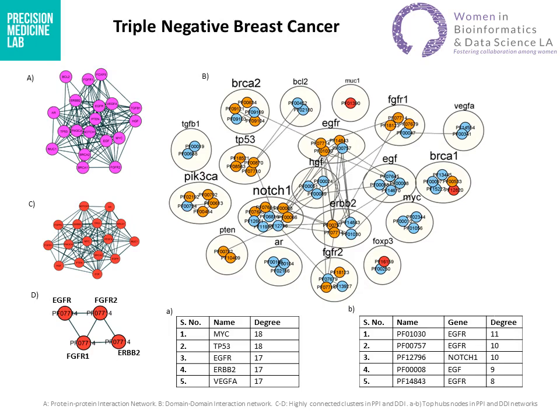We performed the same network analysis for triple negative breast cancer candidate genes. We identified HUB proteins and domains. The HUB proteins are also part of the highly connected cluster shown in figure C, while none of the HUB domains became part of the densely connected cluster. Moreover, we can see that TP53 and EGFR are both top hubs in head and neck squamous cell carcinoma and triple negative breast cancer protein-protein interaction networks.